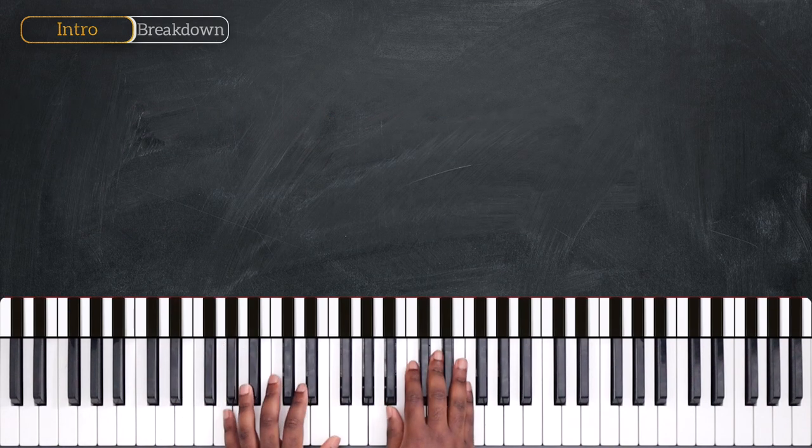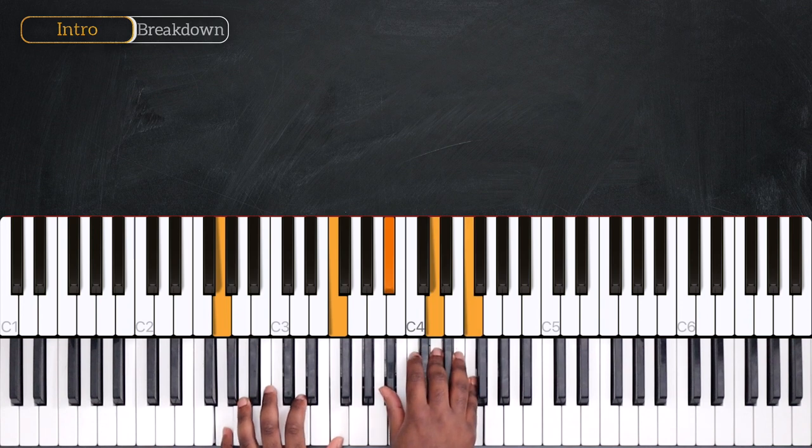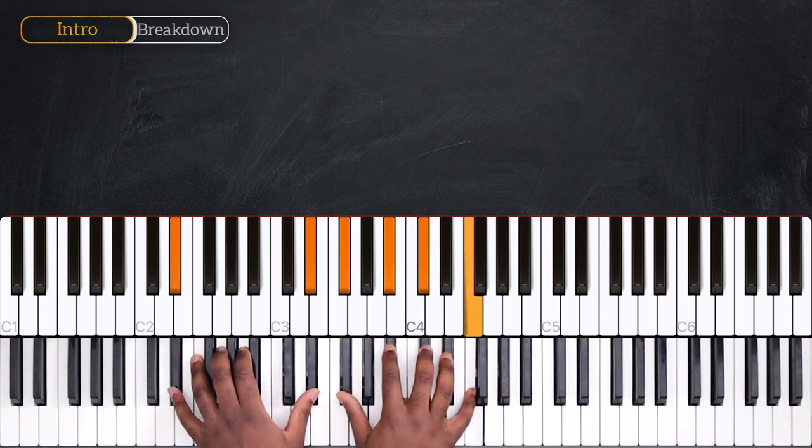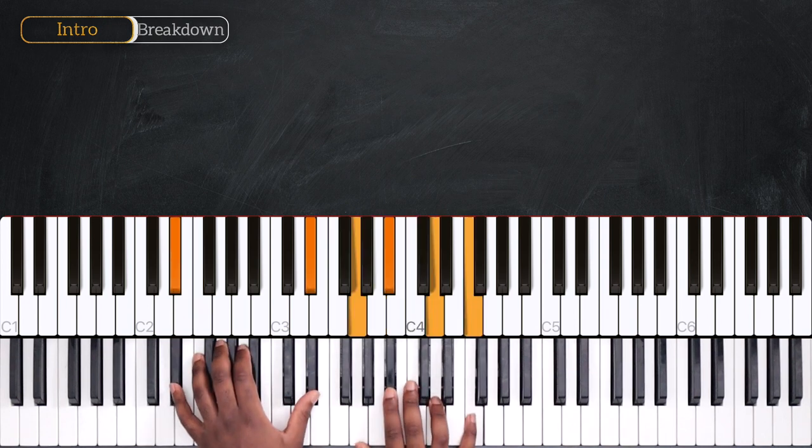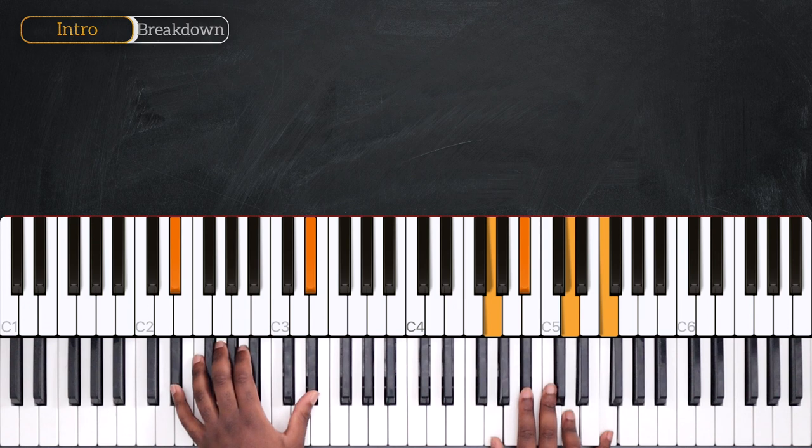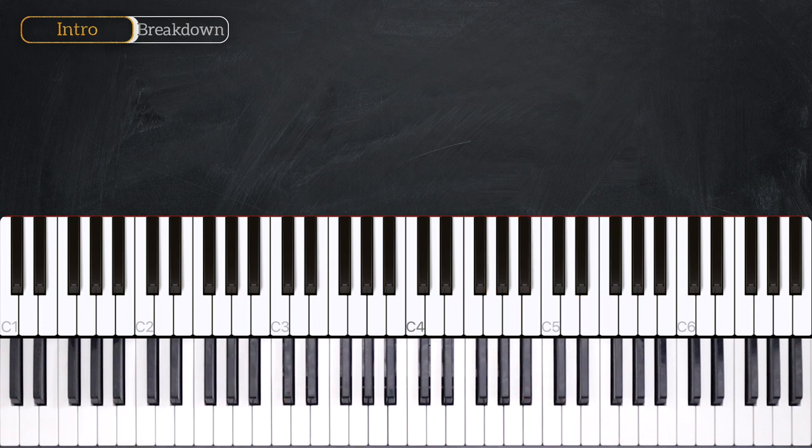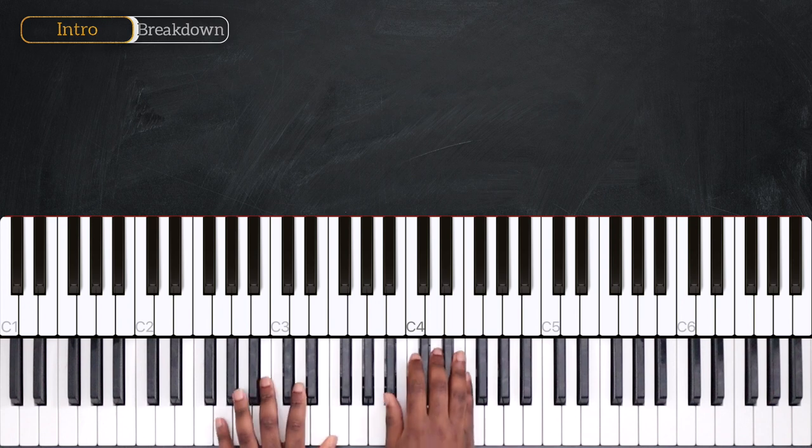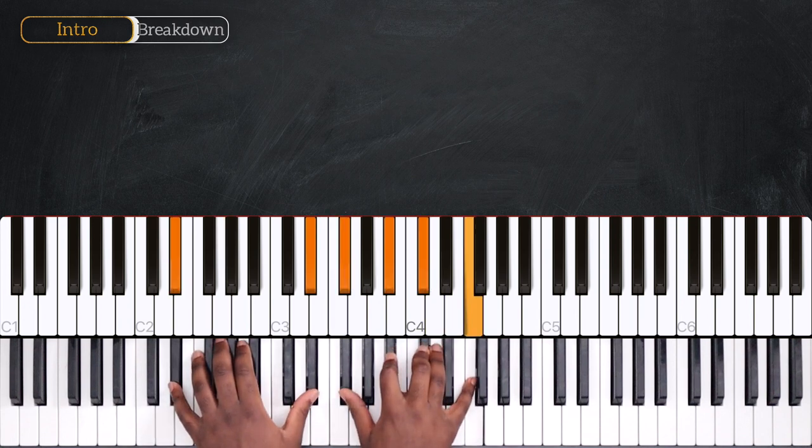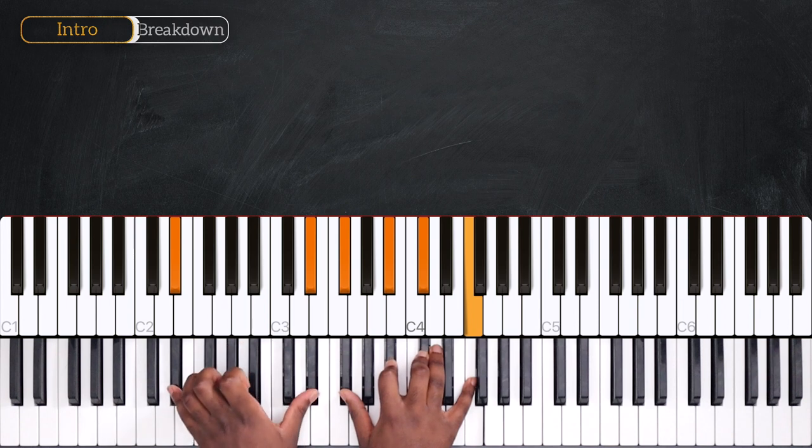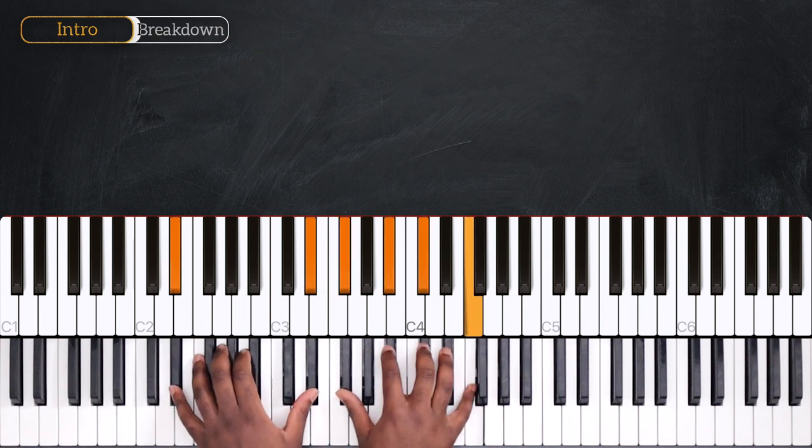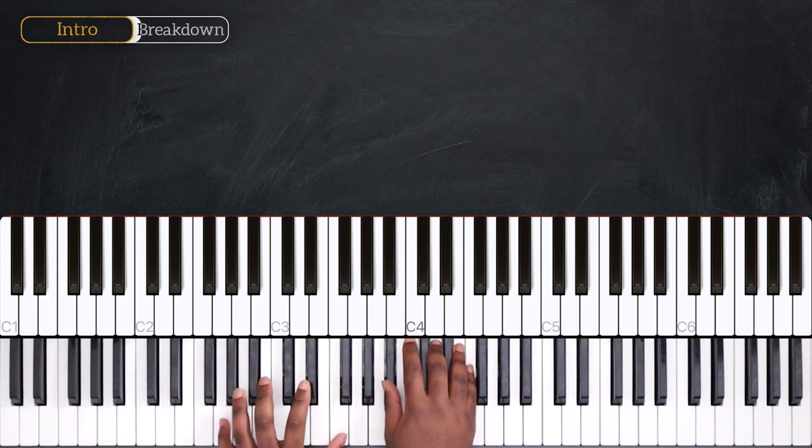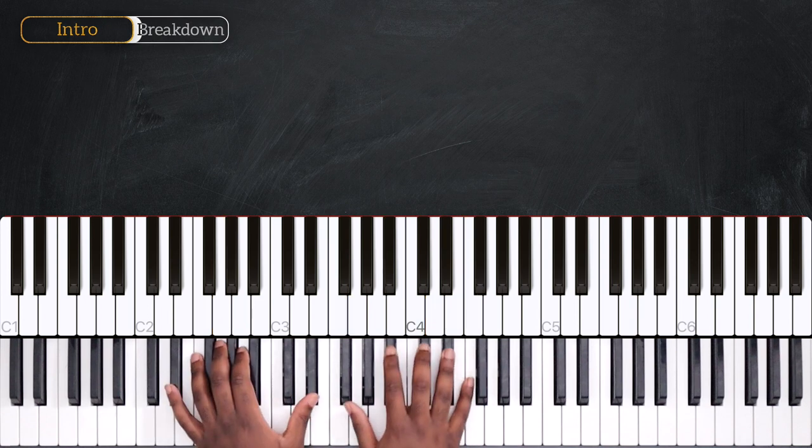Okay, so once again we have G minor 7, then E flat minor 9. To play the intro, we have a back and forth between G minor and E flat minor. I'm going to do it four times in total. Start with G, and then play E flat. Second time G, E flat again.